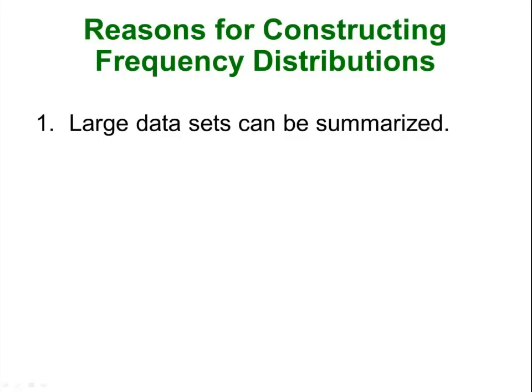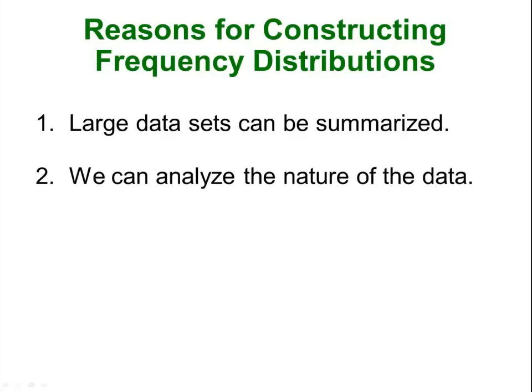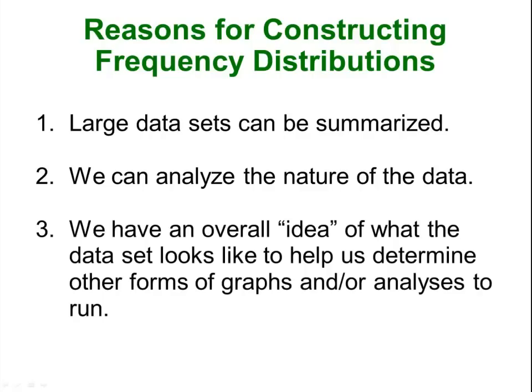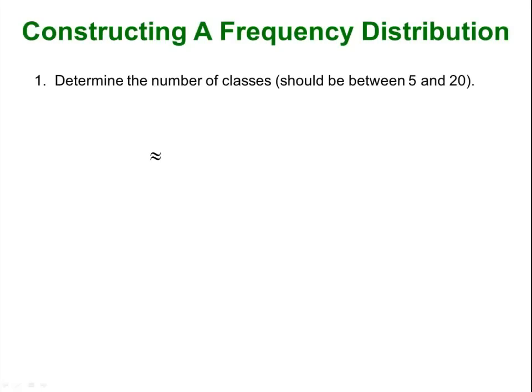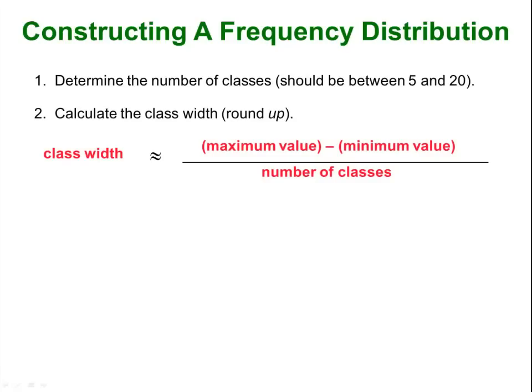Reasons why we would want to construct these frequency distributions: if we have a large data set it is a good way of summarizing the data. By looking at the frequencies we can get an idea of the overall spread and the overall shape of the distribution. Constructing a frequency distribution is not too difficult. You determine how many classes you should have — keep this pretty small, between 5 and 20. Then you figure out the class width by taking the maximum data value minus the minimum data value, which gives you the range, and divide that by the number of classes you have decided on.